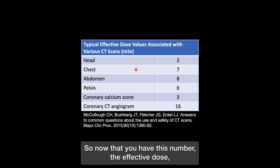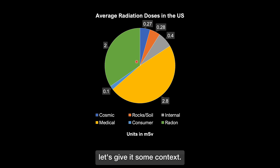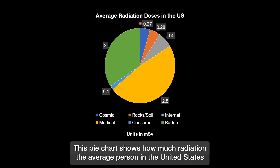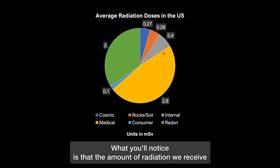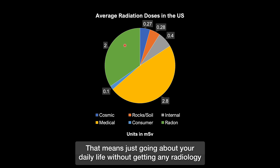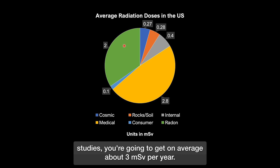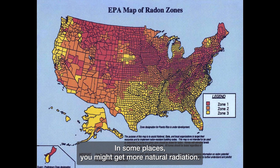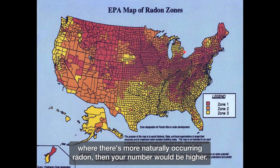Now that you have the effective dose, let's give it some context. This pie chart shows how much radiation the average person in the United States gets. The amount of radiation we receive from natural sources is about 3 millisieverts — meaning just going about your daily life without getting any radiology studies, you're going to get on average about 3 millisieverts per year. In some places you might get more; for example, if you live in an area where there's more naturally occurring radon, your number would be higher.